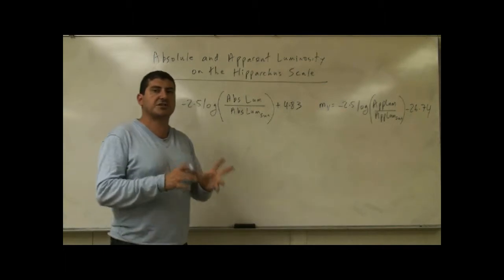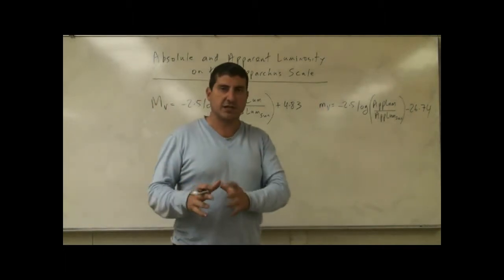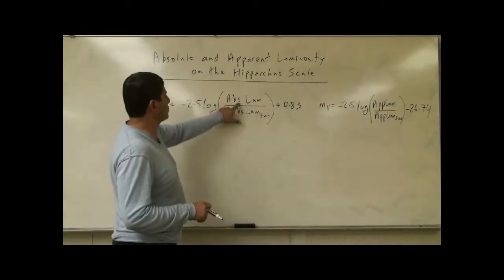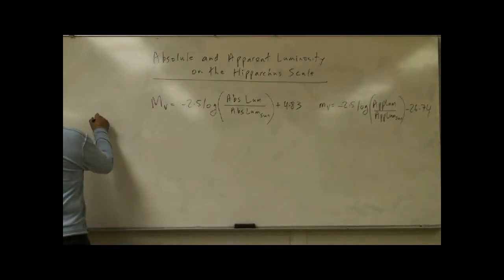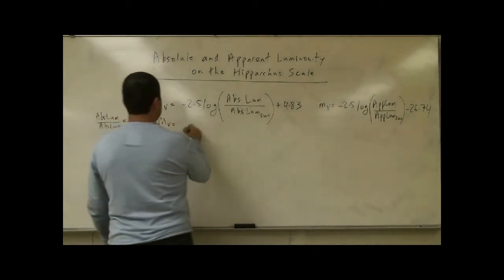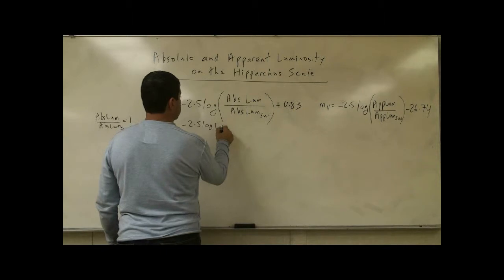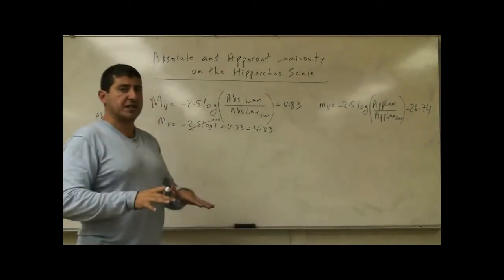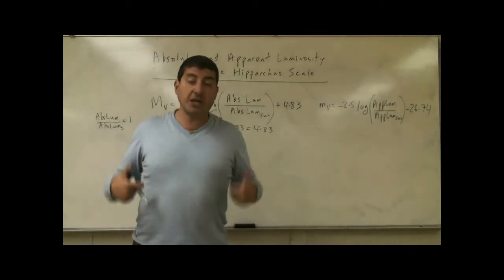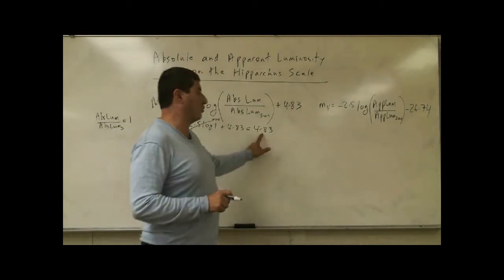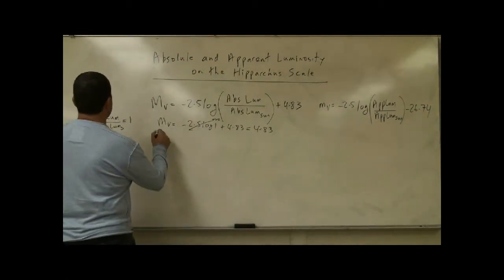Let's see how it works. If a star has exactly the same luminosity as the sun, what is its absolute visual magnitude? If the ratio of absolute luminosity to that of the sun equals 1, then MV equals negative 2.5 times log of 1 plus 4.83. Log of 1 is 0, so MV equals 4.83. Any star as bright as our sun — including our own sun — has an absolute visual magnitude of 4.83 on the Hipparchus scale.